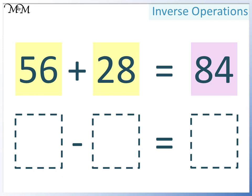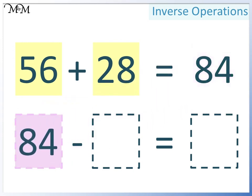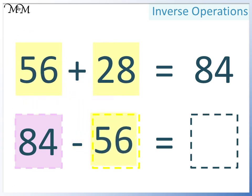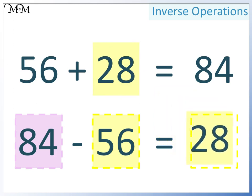We can simply rearrange the numbers. Because we want to write a subtraction, the largest number must go at the start. The largest number is 84. In the next two spaces we can have either of the two smaller numbers, so in this space we can write 56, and in the final space we can write 28. 84 take away 56 equals 28.